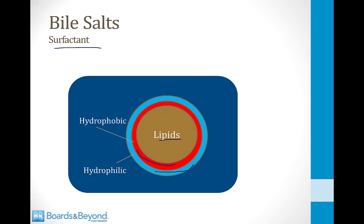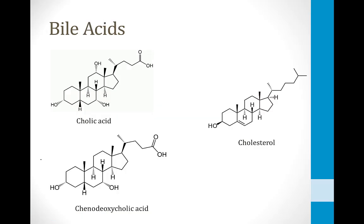If you have a greasy pan you're not going to be able to dissolve that grease in water, but if you add soap — which is a surfactant — the soap will bind to the grease and also dissolve in water, and therefore your pan becomes clean. So now let's talk about the chemical structure of bile salts so that we can understand why they have one portion of their molecule that likes water and one that likes lipids, allowing them to function as surfactants.